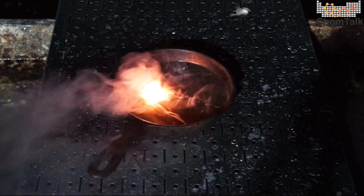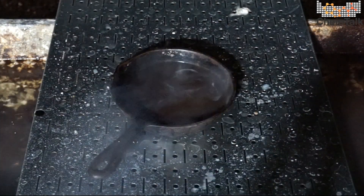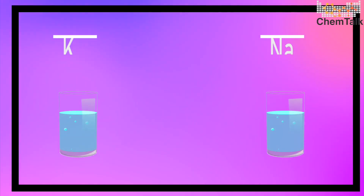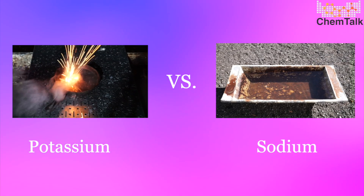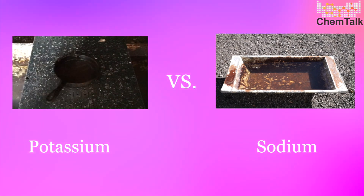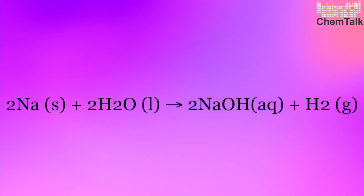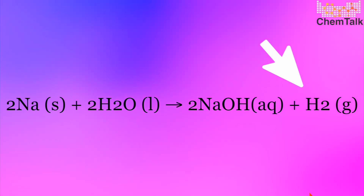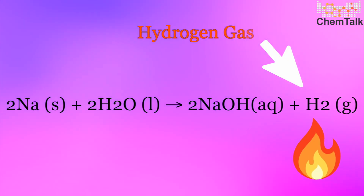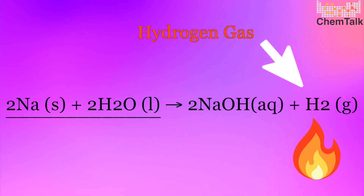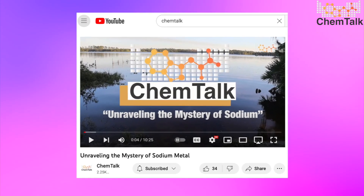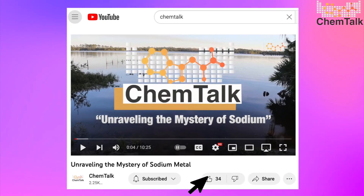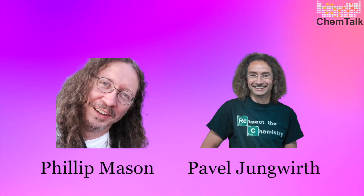But why does this happen? Why do sodium and potassium explode in water? The mechanisms behind this violent, explosive behavior of potassium and sodium are actually the same, although the degree of their reaction differs significantly. The long-held assumption was that the highly flammable hydrogen gas produced from the interaction between sodium and water causes the explosion. However, as chemists Philip Mason and Pavel Youngwerth discovered, the actual scientific mechanism is different.